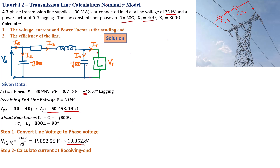Step 2 is to calculate the current at the receiving end — the current flowing into the load. To calculate IR, we use the active power and power factor with the power formula. We can deduce that IR equals PR divided by the square root of 3 times VR times cos theta.